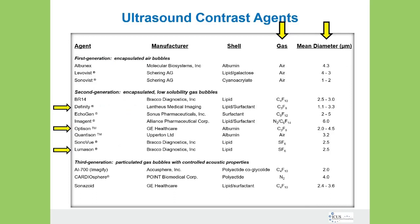Let's get started by talking about ultrasound contrast agents that we use or have used in the past. Going across the top of the screen, we're talking about the agents — not so much who manufactures them — but the shell of the contrast agent, the gas inside the bubble, and the diameter of the bubble itself. Those of you who have been scanning for a long time may have used Albunex, one of the first contrast agents. The shell was albumin, the gas is air, and it was a rather large bubble.